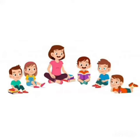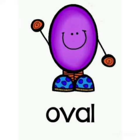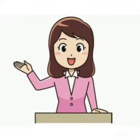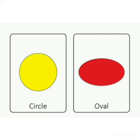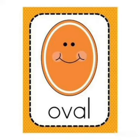This shape looks like an egg. Can you guess which shape this is? Which shape looks like an egg? Oh yes, it's an oval! Which shape are we going to talk about? Yes, oval. It has no sides and no angles. It is not perfectly round like a circle. Oval is wider in one direction than the other.